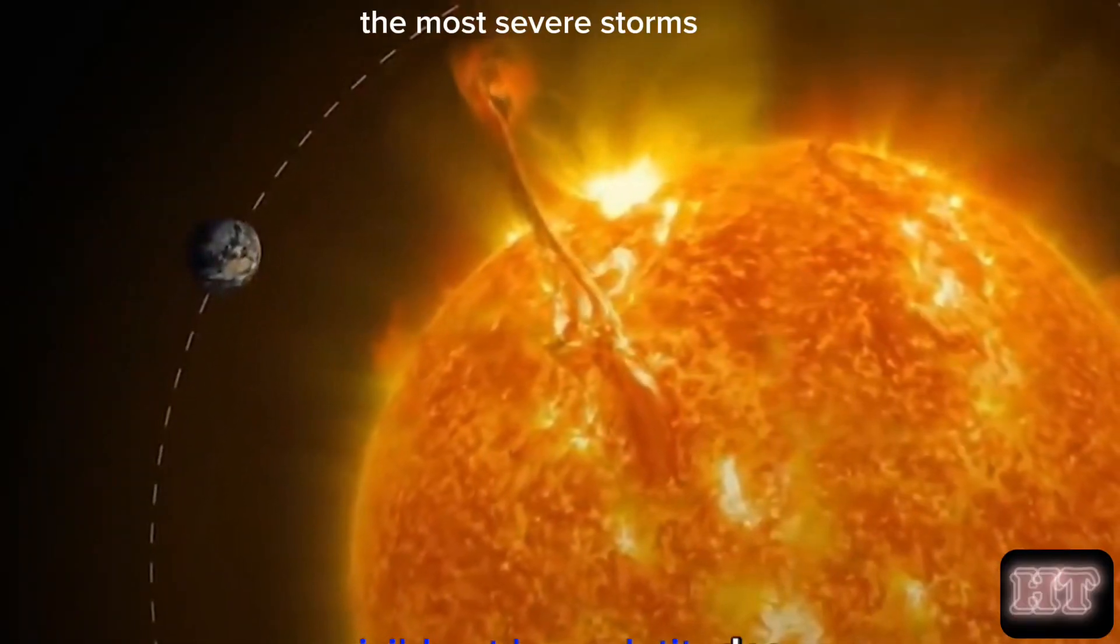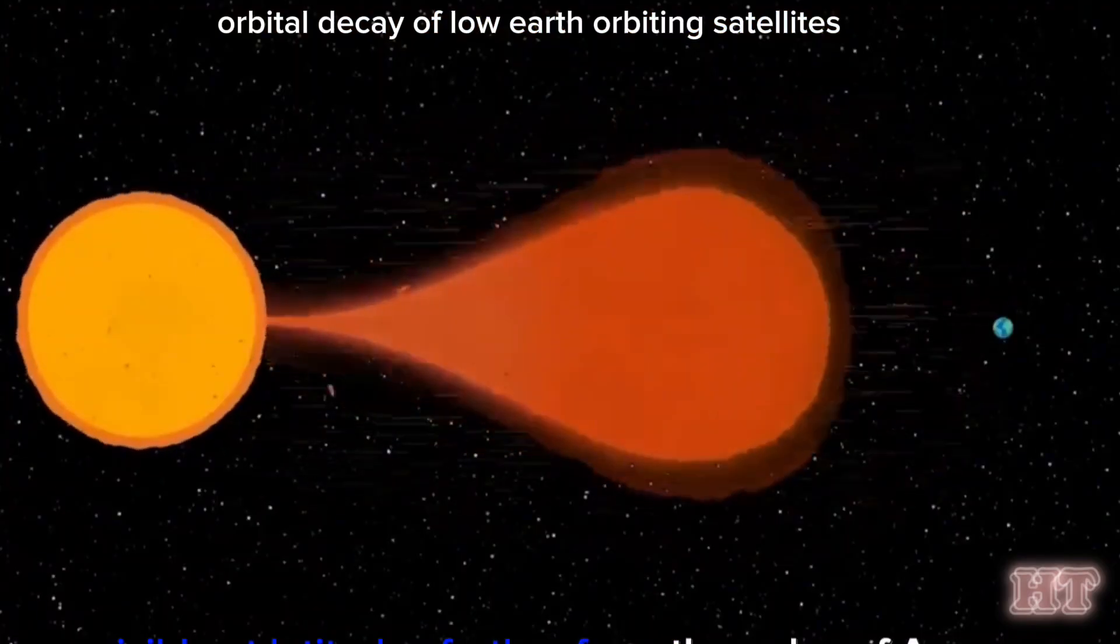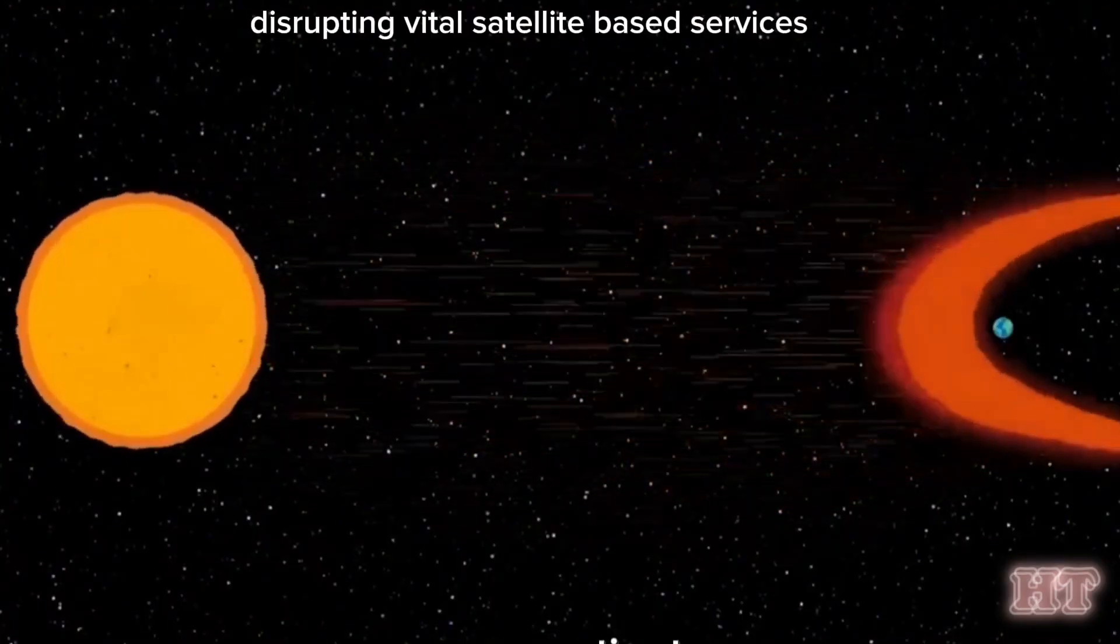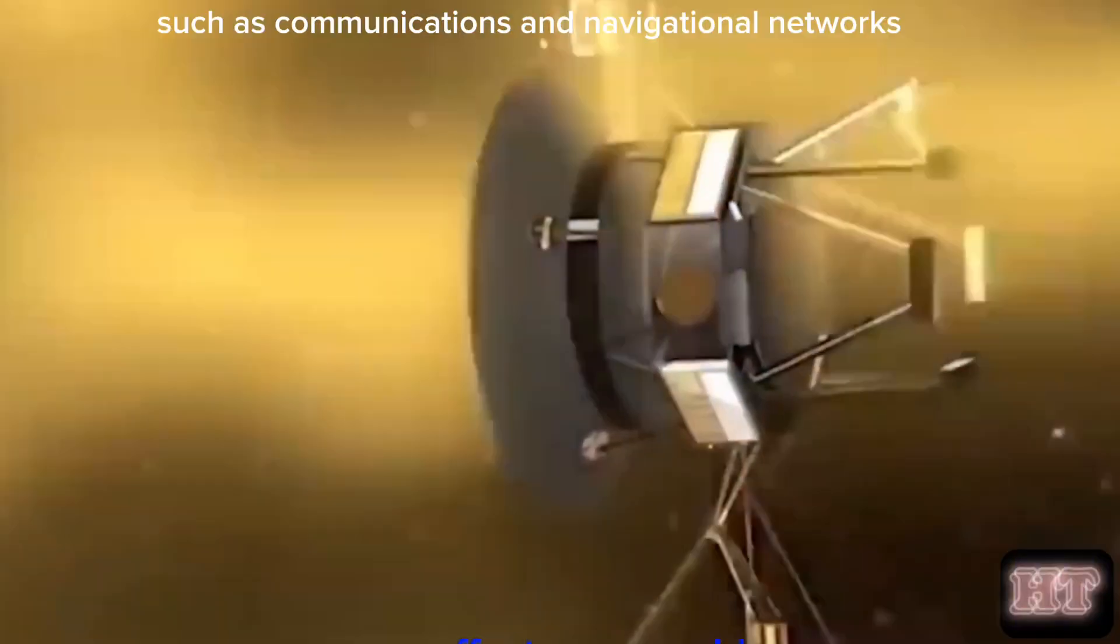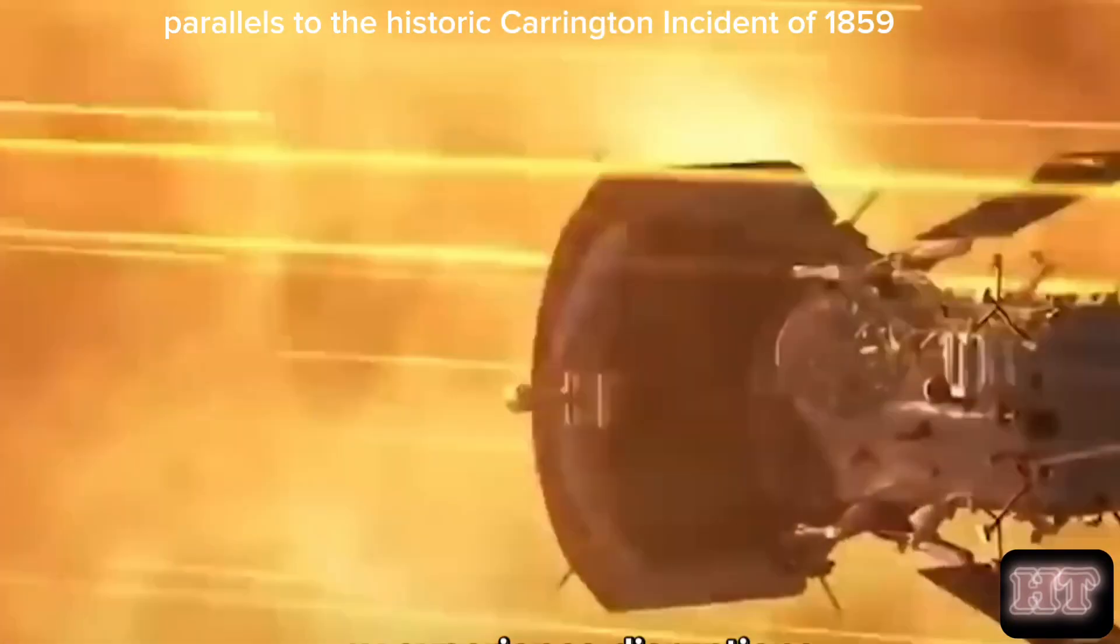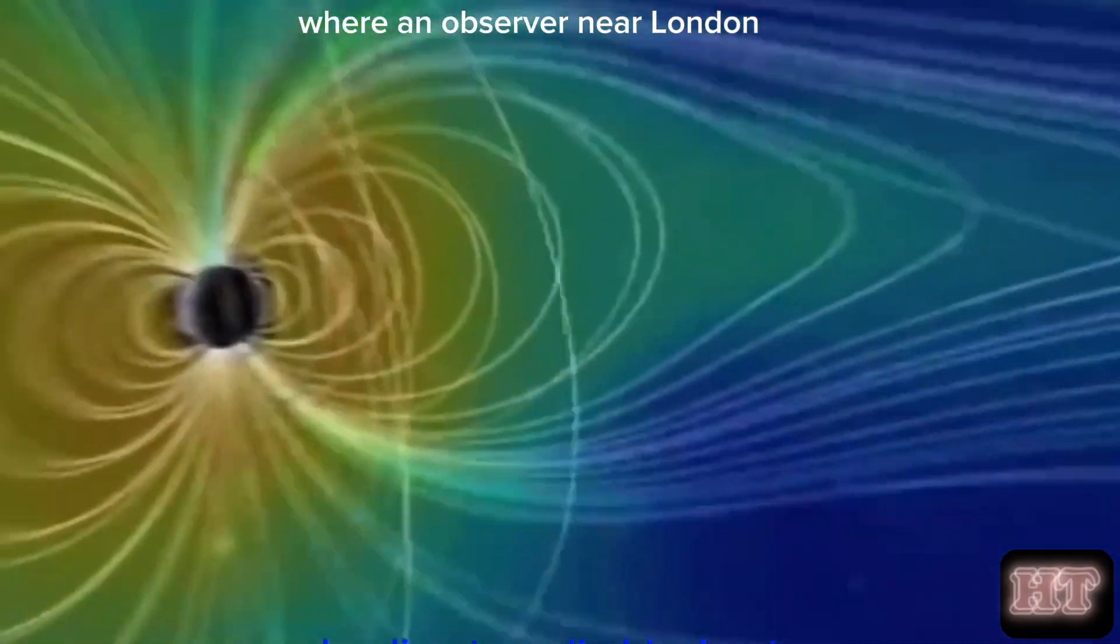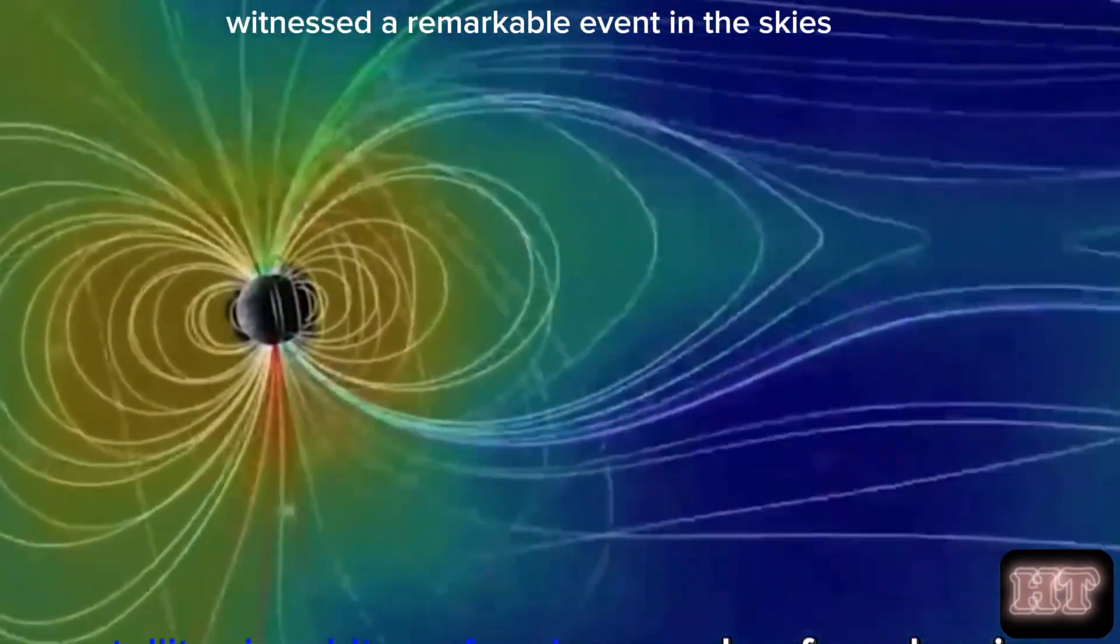The most severe storms might even result in catastrophic orbital decay of low-Earth orbiting satellites, disrupting vital satellite-based services such as communications and navigational networks. The researchers draw parallels to the historic Carrington Incident of 1859, where an observer near London, Richard Carrington, witnessed a remarkable event in the skies.